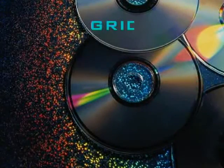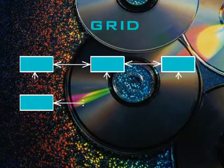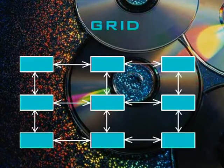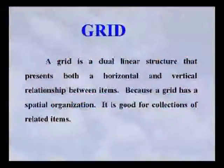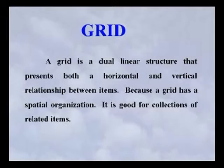Grid organization. A grid is a dual linear structure that presents both a horizontal and vertical relationship between items. Because a grid has a special organization, it is good for collections of related items.